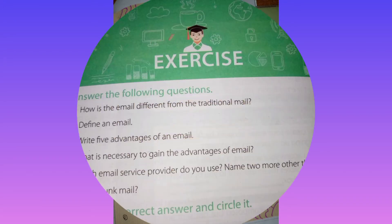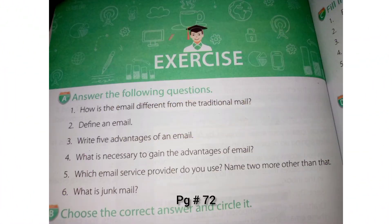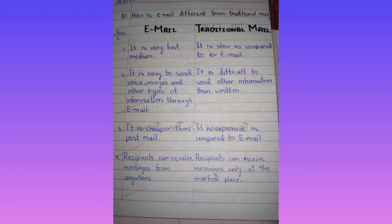Write question number one: How is email different from traditional mail? This answer is not in your book — the answer is showing on your screen. First of all, draw one line. In the first column write the heading 'Email' and in the second column write the heading 'Traditional Mail.' Now we have four points in this answer.